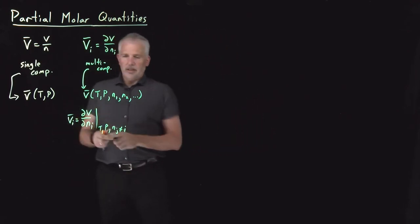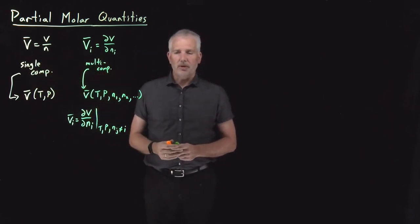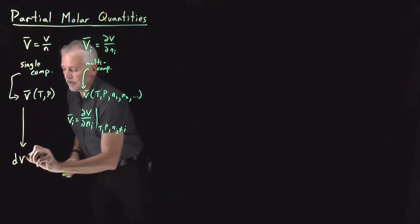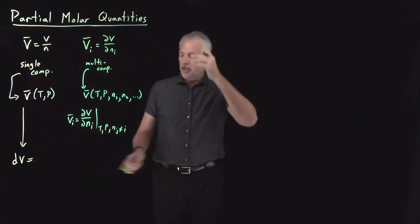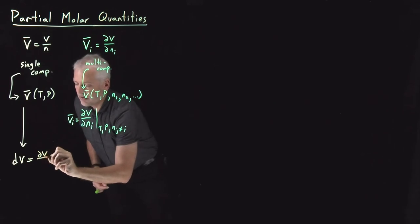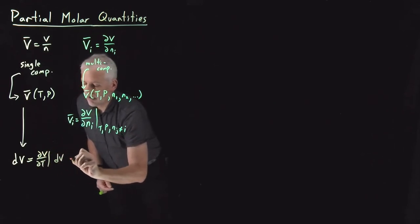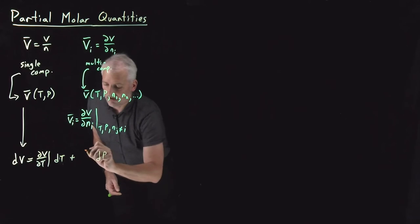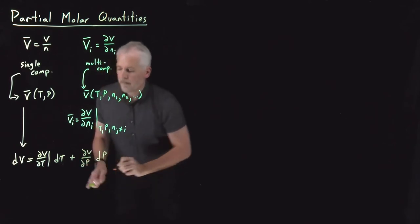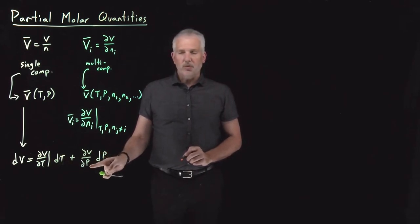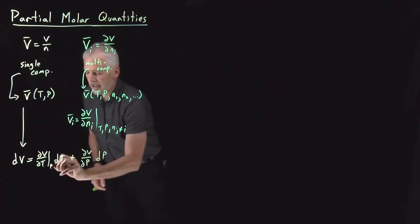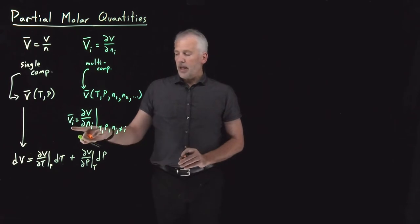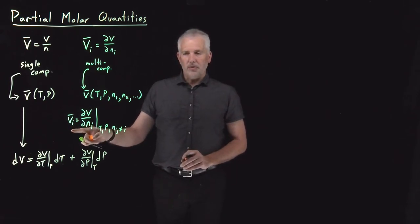Continuing this discussion of differences between single-component and multi-component volumes: in the single-component case, we would write a differential expression saying the change in volume may be due to some change in temperature plus some change in pressure. As long as we know how quickly volume changes with temperature (at constant P) and how quickly it changes with pressure (at constant T), we can use those to compute the change in volume.